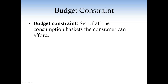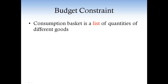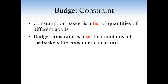Let's start by explaining what we mean by budget constraint. The budget constraint is the set of all the consumption baskets that the consumer can afford. What's a consumption basket? A consumption basket is a list of quantities of the different goods. So the consumption basket is a list of quantities of different goods, but the budget constraint is the set of all the baskets that the consumer can afford.